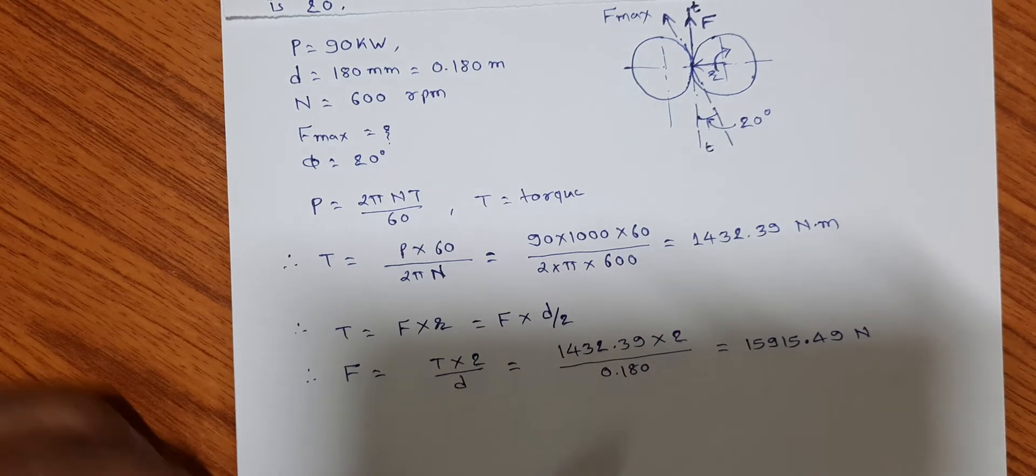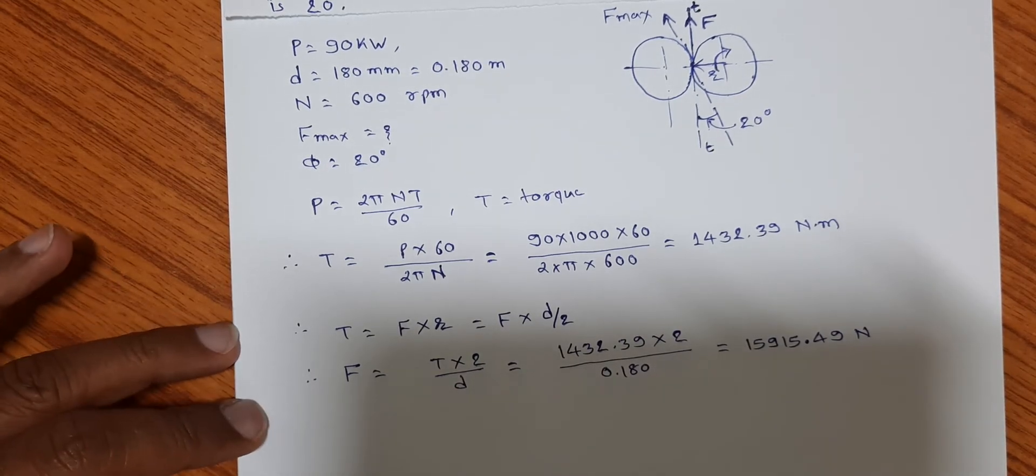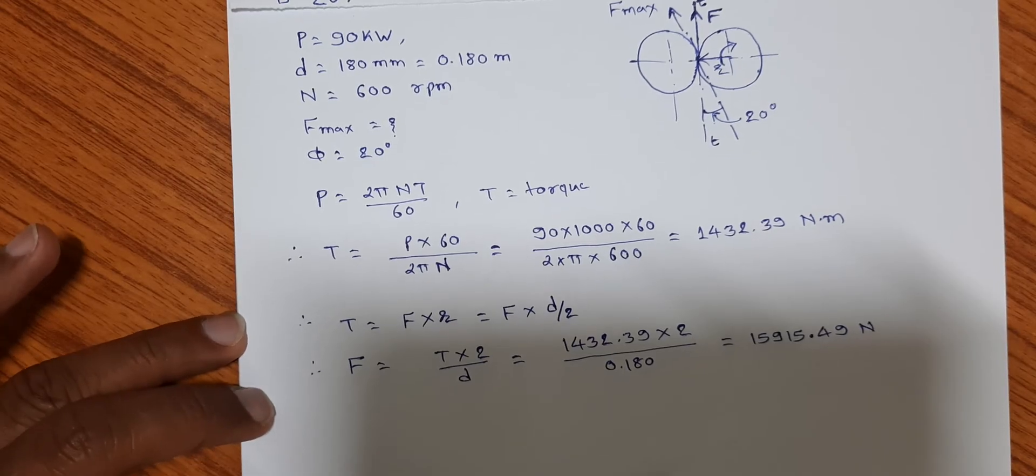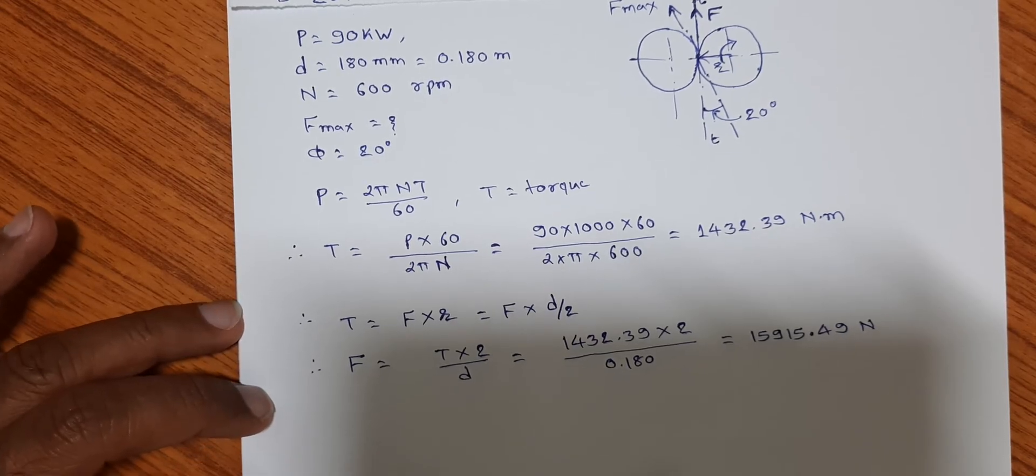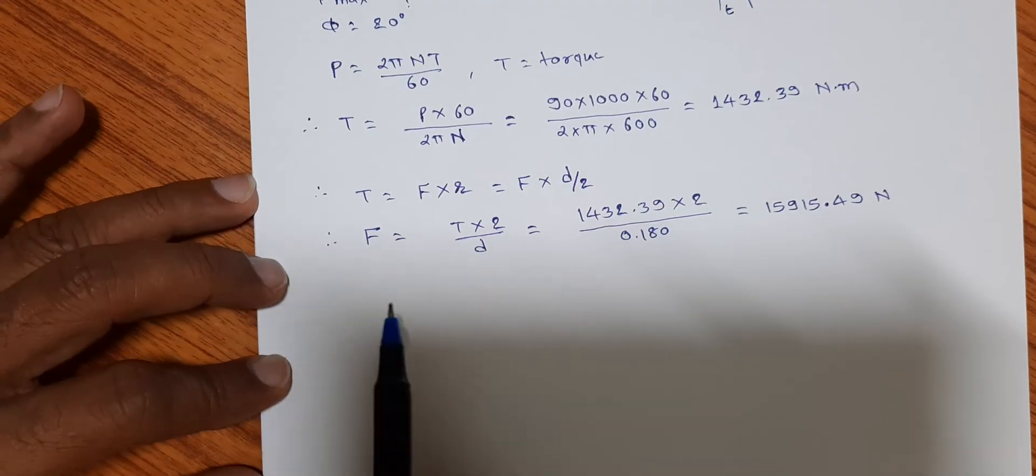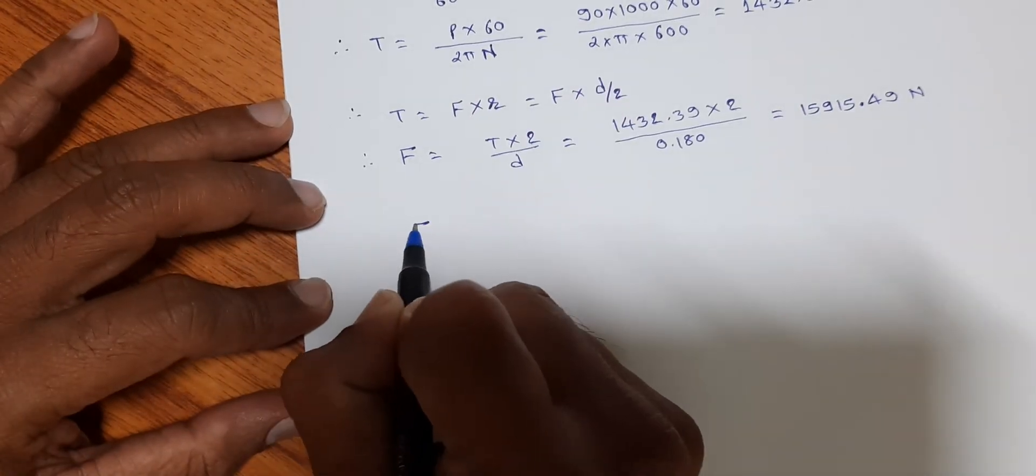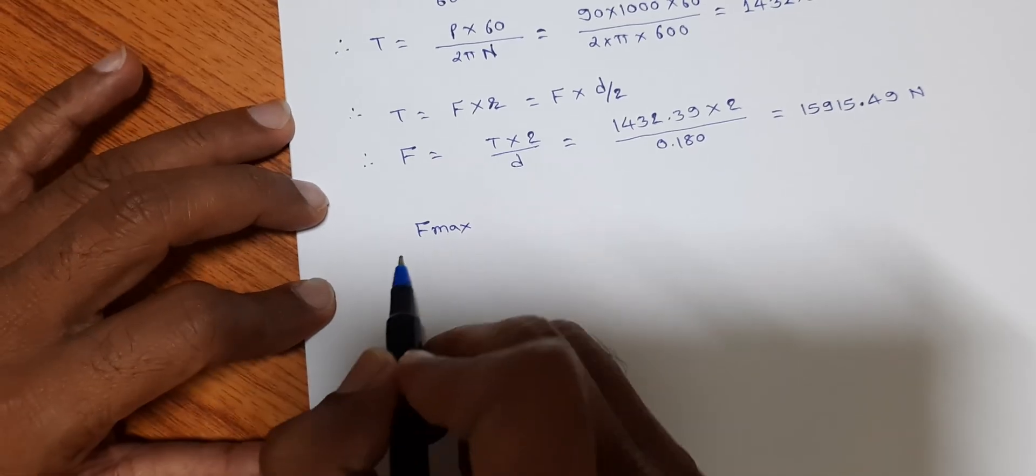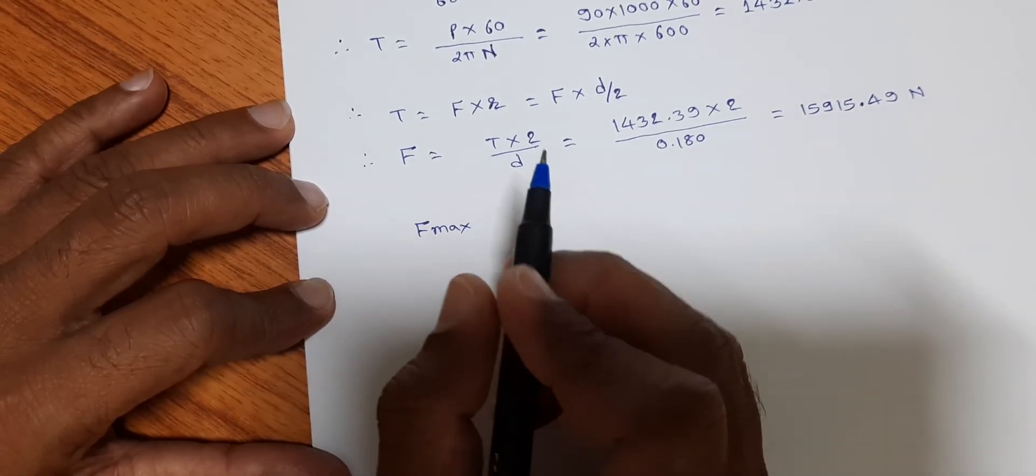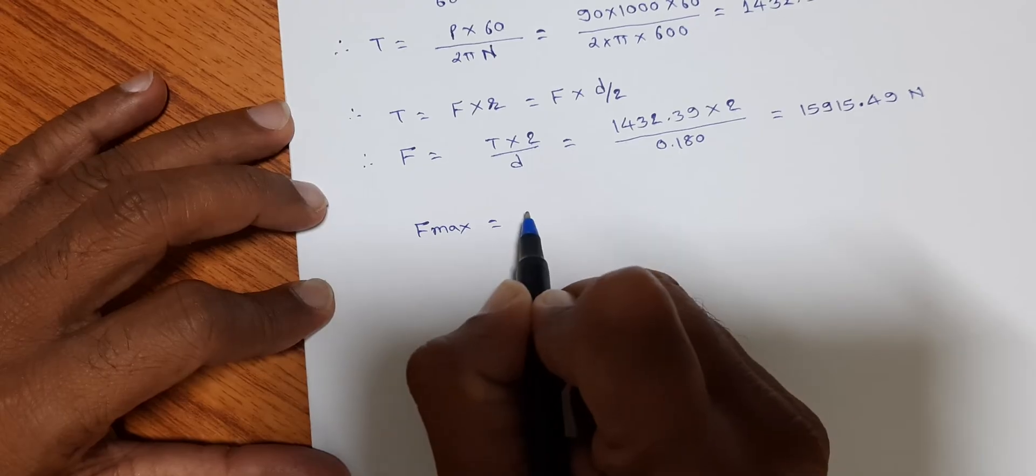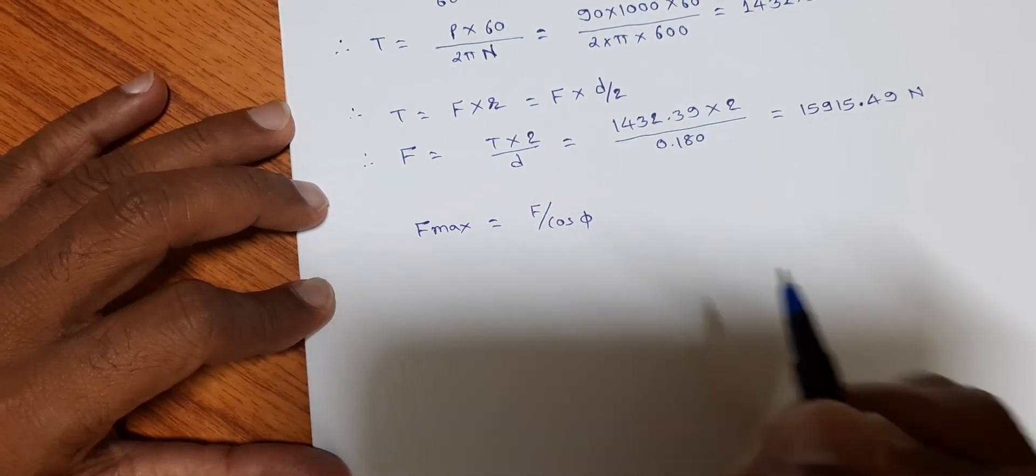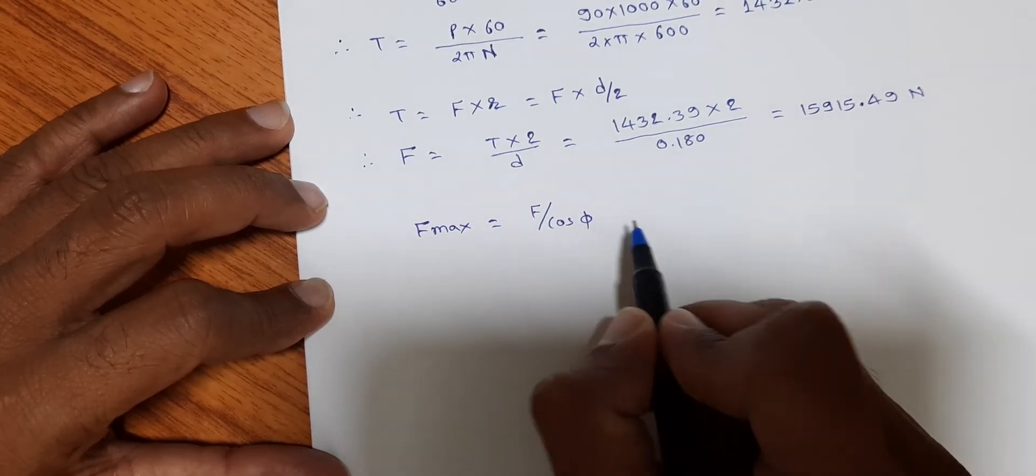So from the diagram, we can write the relation between F_max that is acting along the pressure line and the force along the common tangent. That is, F_max is equal to F upon cos φ. So substituting the values.